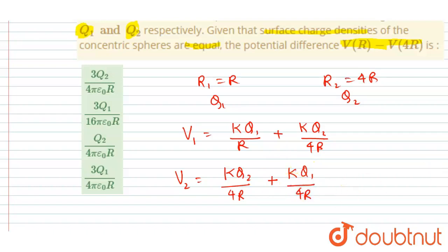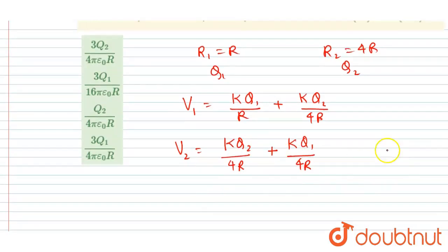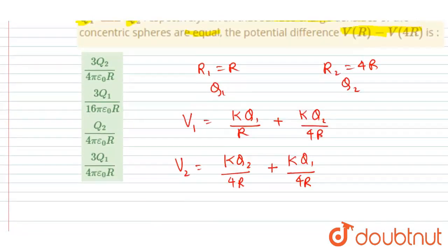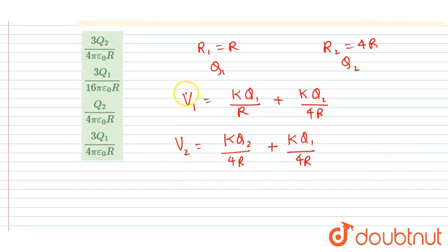Now you could subtract the two equations to find out the V(r) minus V(4r). So this is V(r) and this is V(4r). So we want the difference, right? So if I subtract the two to find out V(r) minus V(4r).